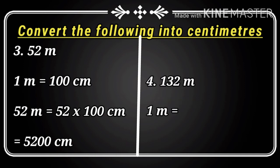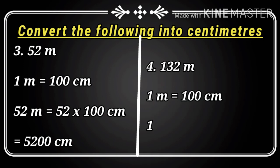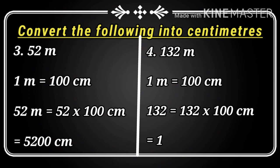Question number four: 132 meters. One meter equals hundred centimeters. So 132 meters equals 132 multiplied by hundred. As I explained in the trick, add two zeros after the number. So 13,200 centimeters is the correct answer.